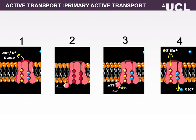Three sodium ions bind from the inside to the pump in one conformation. The pump becomes phosphorylated by ATP, causing a conformational change to a second state that does not bind sodium but does bind two potassium ions. Therefore, three sodium ions are released to the outside and two potassium ions are bound from the outside. Upon hydrolysis, the ATPase reverts back to its original conformation, releasing two potassium ions and binding three sodium ions from the inside.